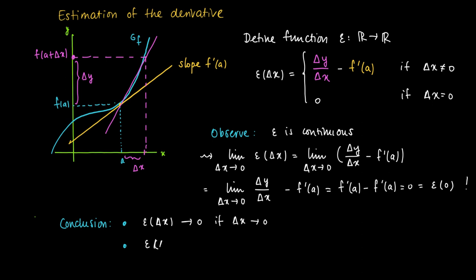Also, if we multiply ε(Δx) times Δx, which means that on both equations we may just multiply through with Δx, then we get Δx times (Δy/Δx - f'(a)), if only Δx is not equal to 0.